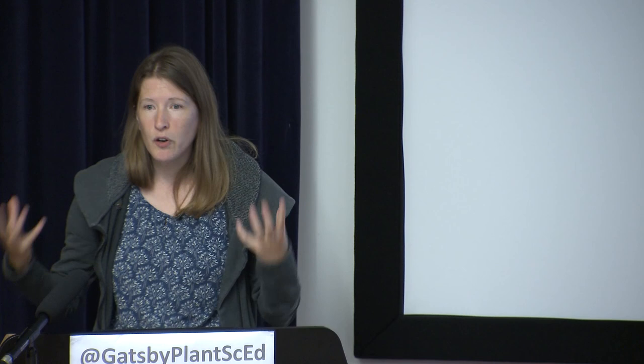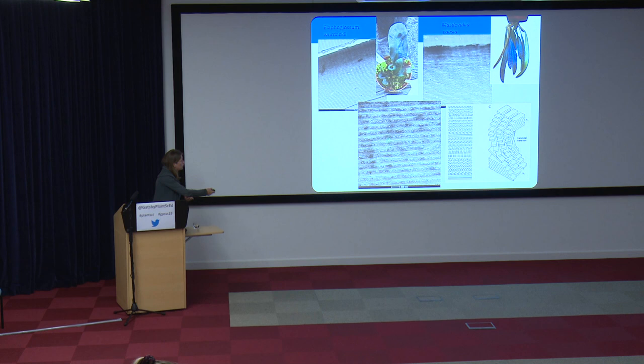What's quite interesting about this helicoidal structure is that this iridescence is found from ferns all the way through to orchids, and it seems to have evolved multiple times. You can image this structure using TEM to get an idea of what the helicoidal structure is doing. Similarly, you can image iridoplasts using TEM and examine their structure — they are stripy. That stripy structure is that multi-layer arrangement. So you've got multi-layer structures both in the cell wall and within the cell in these structures called iridoplasts.